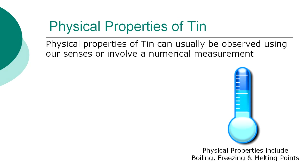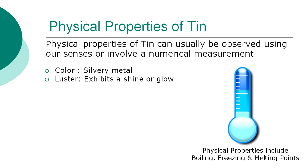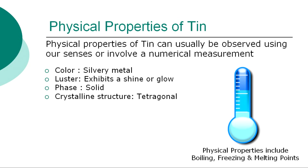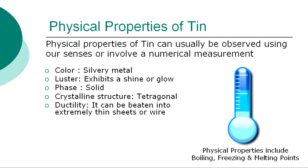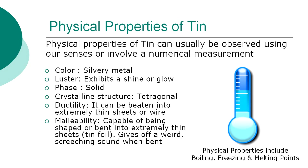The more specific physical properties of tin can usually be observed using our senses and involve a numerical measurement, such as determining its boiling, freezing, and melting points. The physical properties of tin are: Color — silvery metal; Luster — exhibits a shine or glow; Phase — solid; Crystalline structure — tetragonal; Ductility — it can be beaten into extremely thin sheets or wire; Malleability — capable of being shaped or bent into extremely thin sheets, such as tin foil, and gives off a weird screeching sound when bent; Hardness — relatively soft.